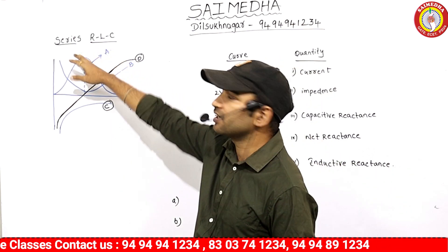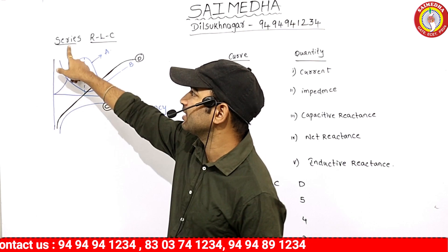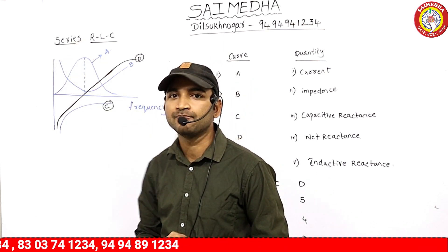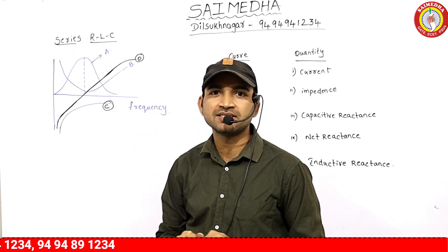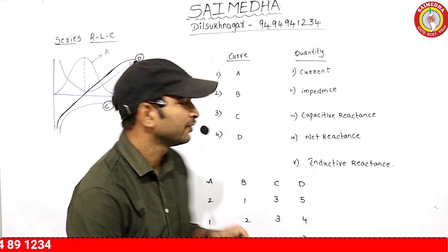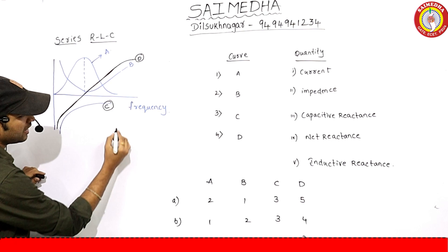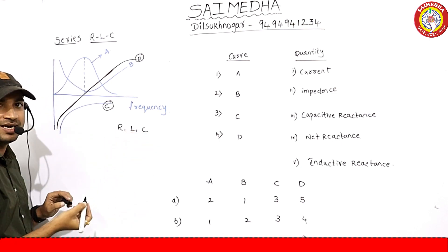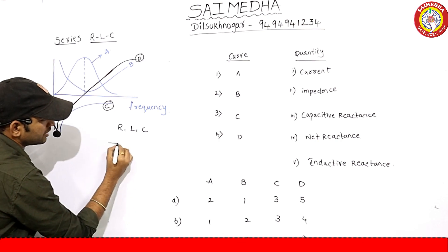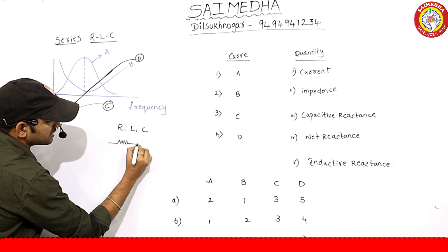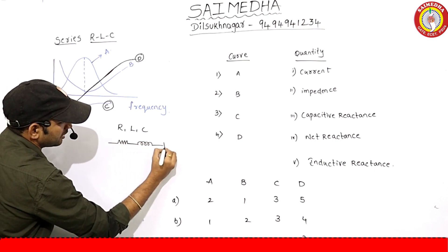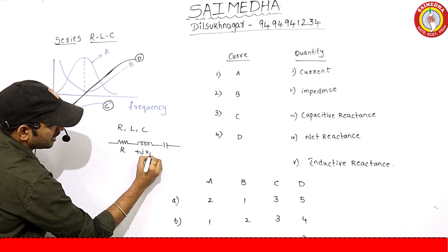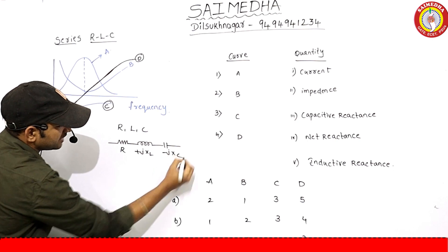We will try to mention the RLC circuit — parallel RLC circuit and series RLC circuit, which is already known. Elements are resistance, inductance, and capacitance. The impedance is R + jXL − jXC.